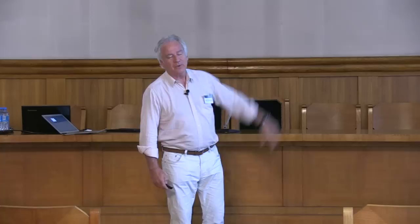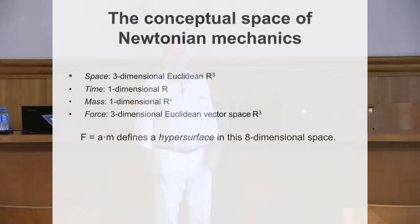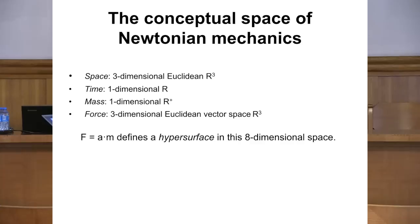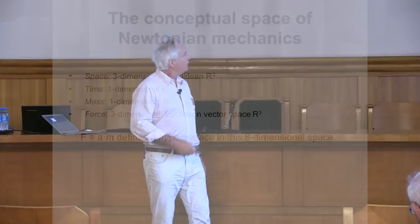We can also go to science. Take the simple case of Newtonian mechanics. We have ordinary Euclidean space, three-dimensional. We have one-dimensional time. We have one-dimensional mass — again, only positive. We don't talk about negative masses. And we have forces, which is a three-dimensional Euclidean space. Newtonian mechanics contains these eight dimensions with a particular Euclidean metric. If you describe a particle in Newtonian mechanics, this is what you need to know, and then you apply Newton's second law — an equation that connects information between the eight dimensions. In the sciences, this is a very common way of looking at things: we have underlying dimensions and formulate equations that connect them, making predictions via these connections.